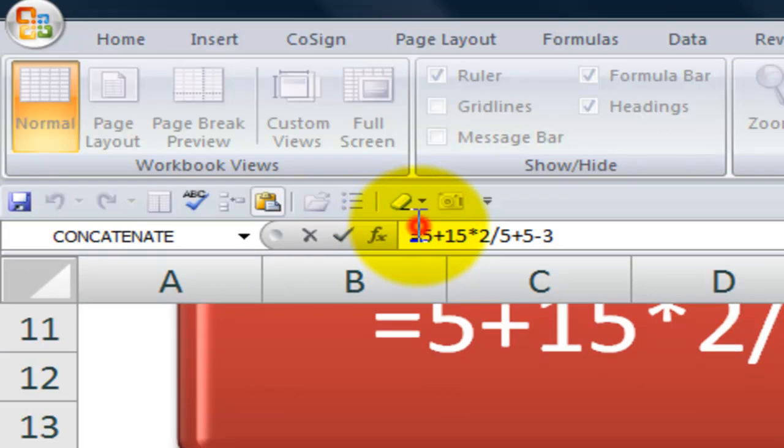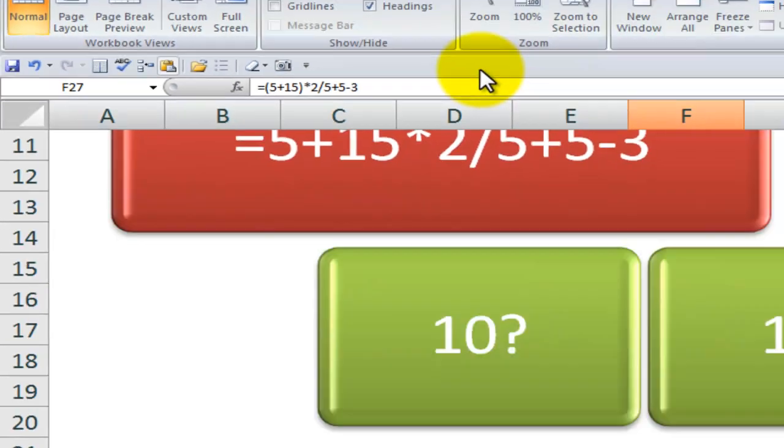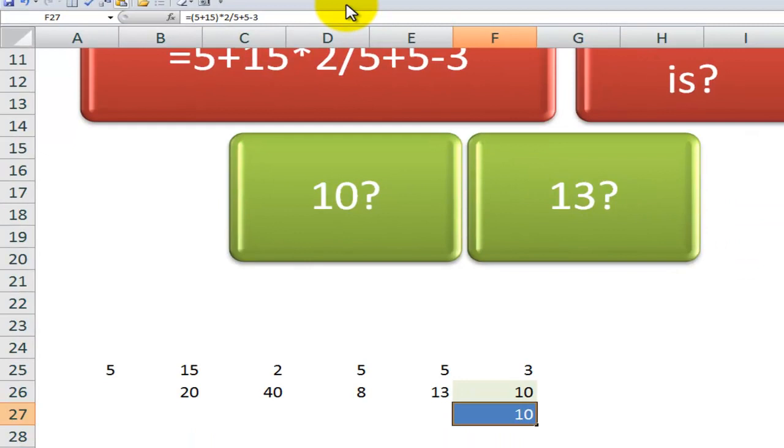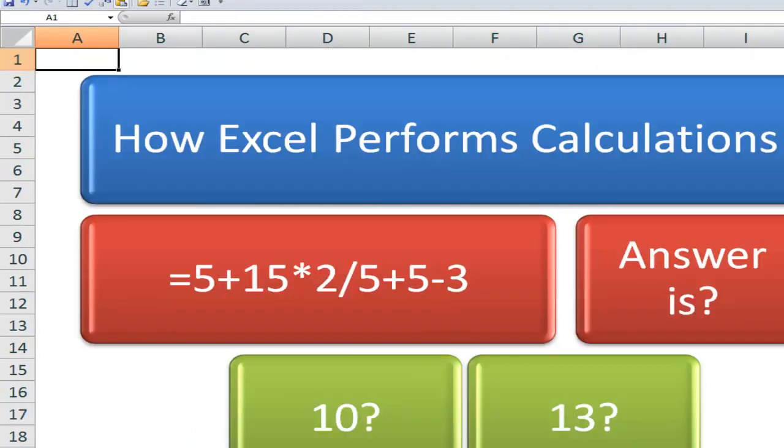We can control calculations in Excel by using the parentheses. In other words, I want the result of 5 plus 15 to be multiplied by 2. So you see how I've included in left and right parentheses the addition that I want evaluated. I want the result of that addition to be multiplied by 2, and so on and so forth. So now I get the result that I want because I understand, first and foremost, how Excel performs calculations.